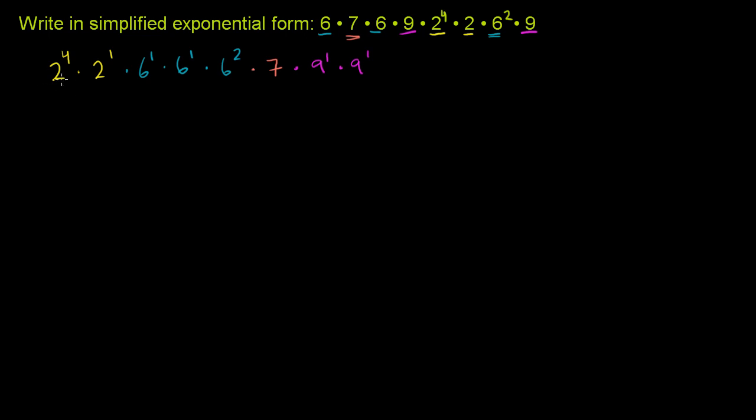Now let's merge the bases, or merge the products of these bases raised to different exponents. You have 2 to the 4th power times 2 to the 1st power. This is going to be the same thing as 2 to the 4 plus 1 power, or 2 to the 5th power.